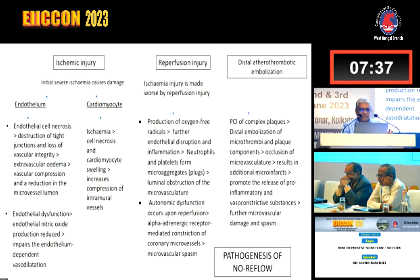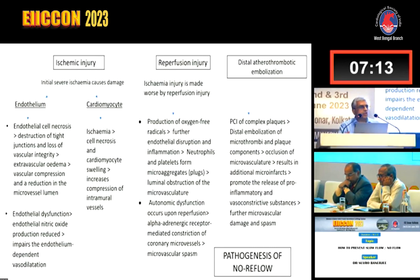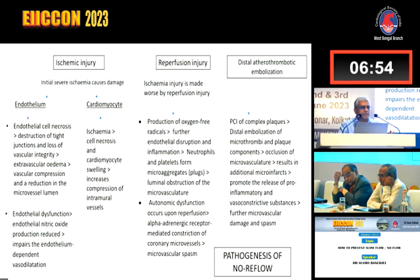Initially, there is ischemic injury. This initial severe ischemia causes damage not only to the cardiomyocyte but also to the endothelium. Endothelial damage from ischemia results in endothelial cell necrosis, destruction of tight junctions, and loss of vascular integrity. There is extravascular edema, resulting in vascular compression and reduction in the microvascular lumen. Ischemia also causes endothelial dysfunction, reducing release of nitric oxide and impairing endothelium-dependent vasodilatation. Ischemia to cardiomyocytes results in cell necrosis and cardiomyocyte swelling, which may further compress the intramural vessels.